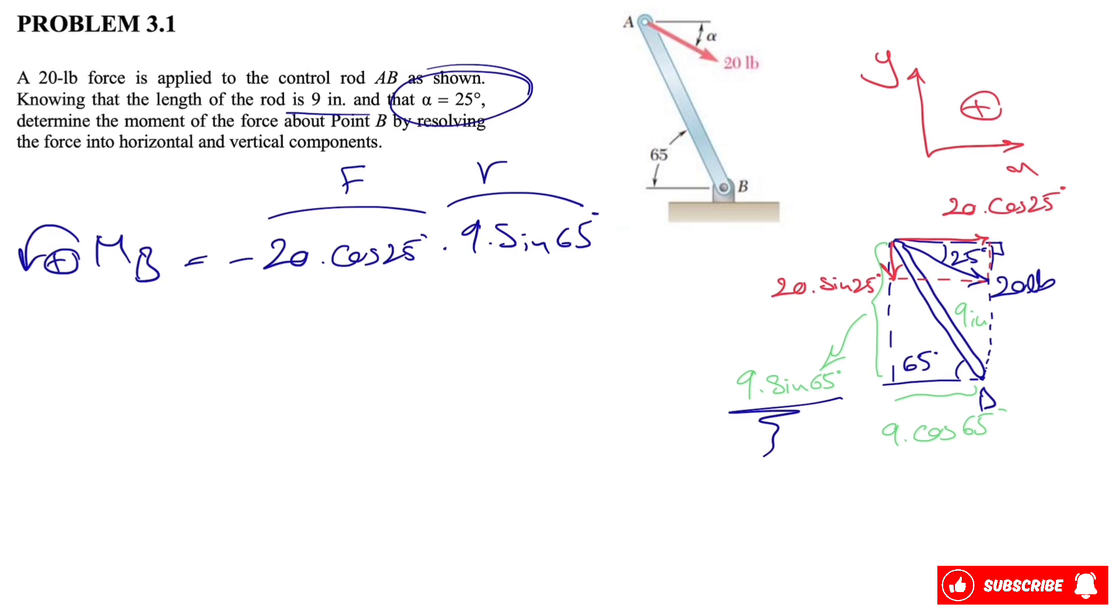That would be the moment for the x component. If we look at the y component, we'll see that the moment will be counterclockwise, which means it will be positive. What we have is 20, this time sine of 25 degrees. Again, this will be our F.